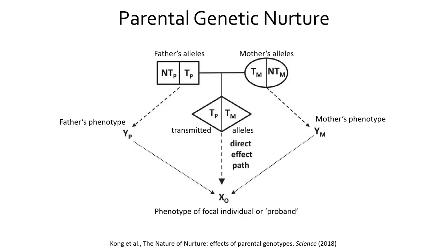Another potentially trickier form of gene-environment correlation comes from a phenomenon called parental genetic nurture, also being called indirect genetic effects. This is when genotypes in relatives such as parents affect the traits of an individual through their environment. Typically we think of genetic effects as coming from inheriting a particular allele that exerts an influence on your trait through your biochemical development and behavior. But any allele that you inherited was also present in at least one of your parents and would have affected their traits as well. For example, if you inherited an allele that increased your educational attainment, it might have also increased the educational attainment of at least one of your parents, and through doing that, affected your own educational attainment through the environment provided for you by your parents.